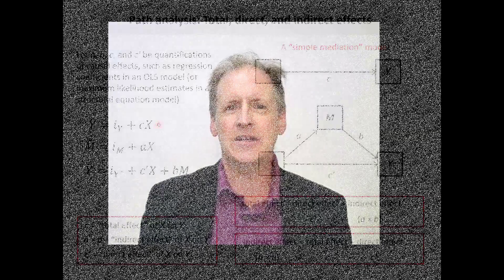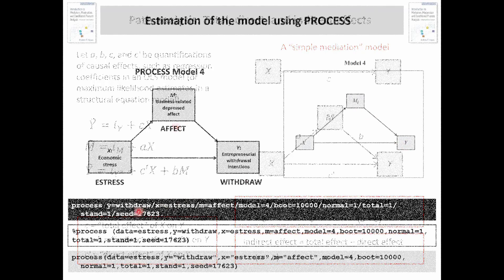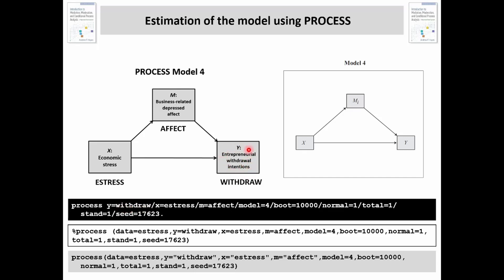In the least squares regression model, I'm estimating Y from X. This is a simple linear regression equation — it has a constant and a weight for X. The weight for X is what an ordinary least squares regression analysis routine would generate when it attempts to find the best fitting model, minimizing the residual sum of squares — the discrepancy between the values of Y and the data. So Y is withdrawal (entrepreneurial withdrawal intentions), X is e-stress (entrepreneurial economic stress), and my mediator is that measure of depressed affect. Those things — Y, X, M, and the model number — are all I need to run this.